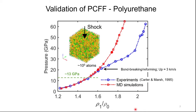We know that the accuracy of MD simulations depends on the accuracy of the potential. So before we use the PCFF for shock propagation and spallation, we have to validate that potential. We computed the shock Hugoniot — that is, shock pressure versus normalized density — for polyurethane using PCFF, shown in red, and compared the results with experiment, shown in blue. You can see that up to approximately 20 gigapascals, the MD simulation agrees with the experimental results.